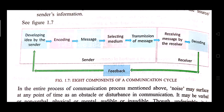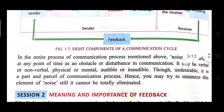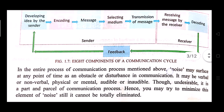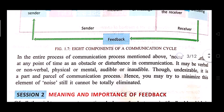Now, in this picture you will see the entire communication cycle: developing an idea by the sender, encoding, then converting it into a message, sent through a suitable medium. The message transmits from one place to another, it reaches the receiver, where it is decoded and understood by the receiver. This is the simple communication cycle, and if you see this figure carefully you will easily understand all the steps involved.